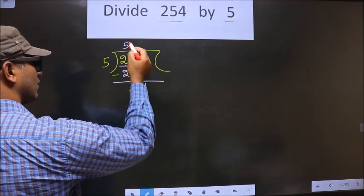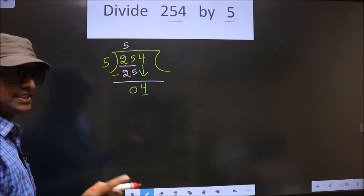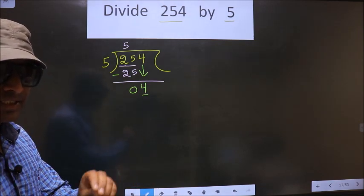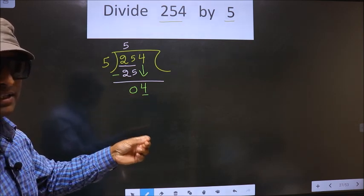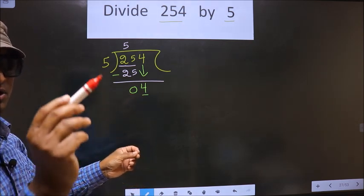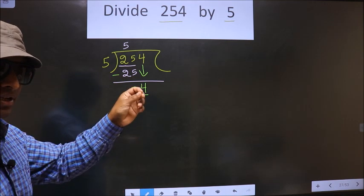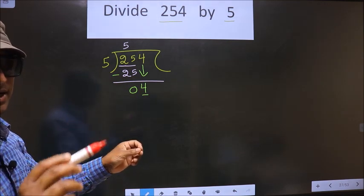Just now you brought the number down, and in the same step you want to put a dot and take 0. Number down, put a dot, and take 0, both at the same step is wrong. You are not supposed to do that.